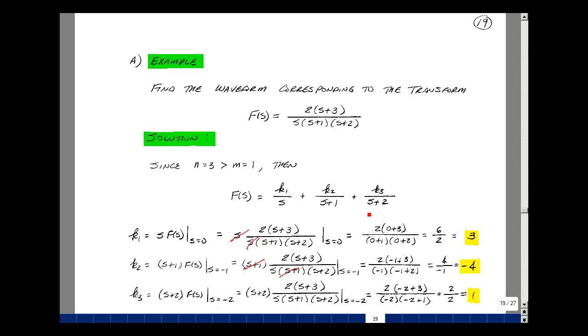Likewise, to find k3, multiply f(s) by (s+2) and let s equal -2. We have cancellation of terms, then 2(-2+3)/[(-2)(-2+1)]. That's 2 over 2, or 1.